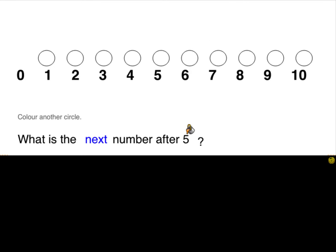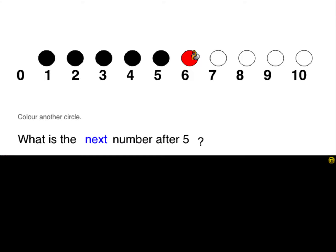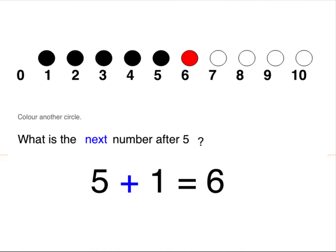So if we want to know what one more than five is, first we have to find five — one, two, three, four, five — and one more is six. If you want to do that in a math sentence, it's five plus one, or one more than five equals six. Can you see what the answer to plus one always is?